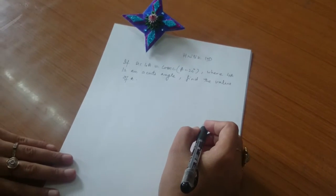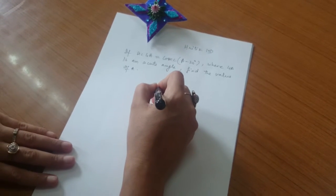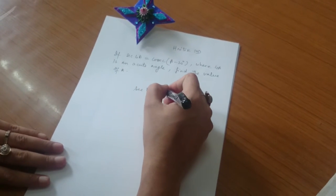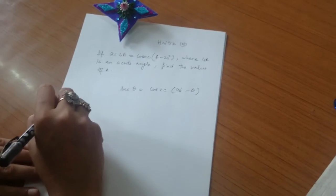There is a trigonometry ratio of complementary angles that says sec theta equals cosecant 90 degree minus theta.